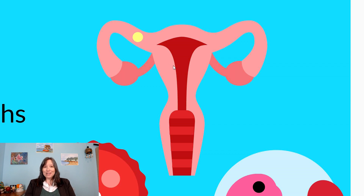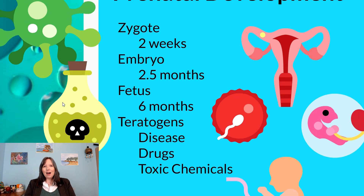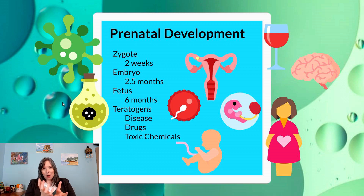By day 14, implantation is usually complete, and that's usually when a positive result can be found on a home pregnancy test, because there are now enough hormones and enough recognition of the pregnancy. The period of the zygote is extremely quick and very fleeting. The cells are not very specialized — it just looks like a homogenous blob of cells, or a blastula.